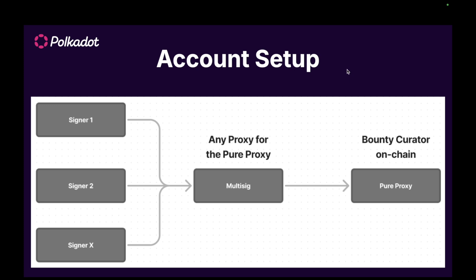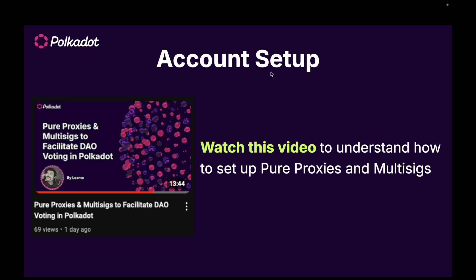The account setup I will use looks like this because I'm using an actual live chain, not a testnet. We have a pure proxy. This pure proxy is the bounty curator on chain as decided by OpenGov. That pure proxy is controlled by a multisig which is the any proxy for that pure proxy. This means the multisig can command the pure proxy to carry out any transaction, and that multisig is ultimately controlled by the signers of the multisig. If that didn't make sense, you should watch the previous video — it explains how to make a pure proxy and a multisig and link the two together.